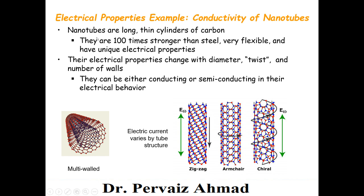Nanotubes are long, thin cylinders of carbon. They are stronger — electrical and mechanical properties make them about 100 times stronger than steel, very flexible, and they have unique electrical properties. Something very strange about nanotubes, especially carbon nanotubes: their electrical properties change with diameter.